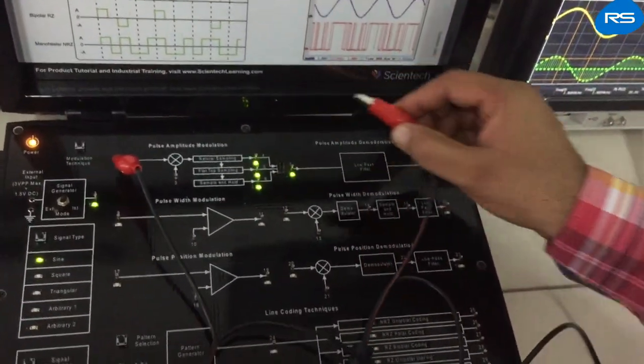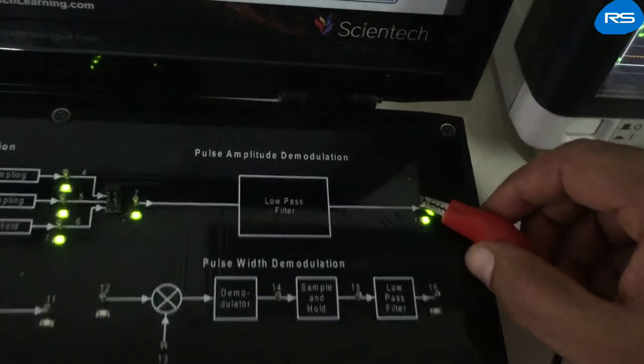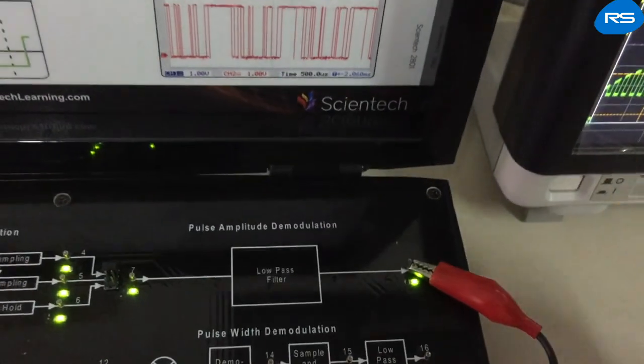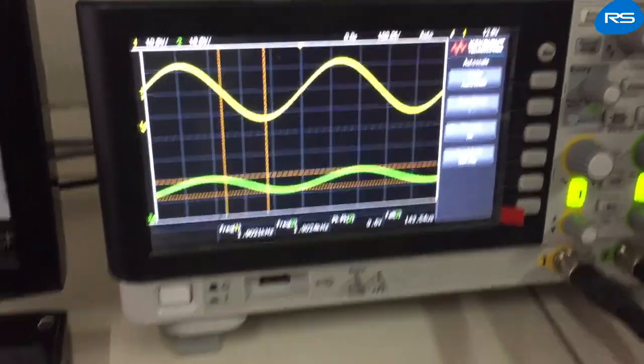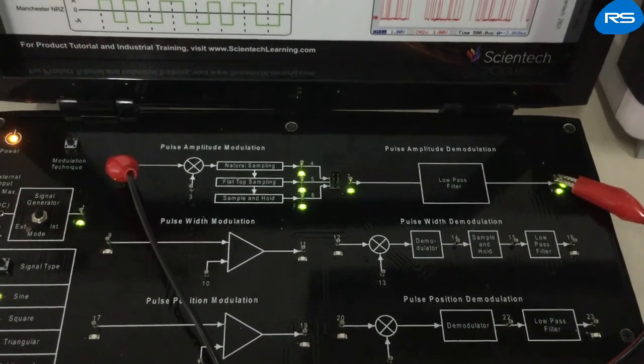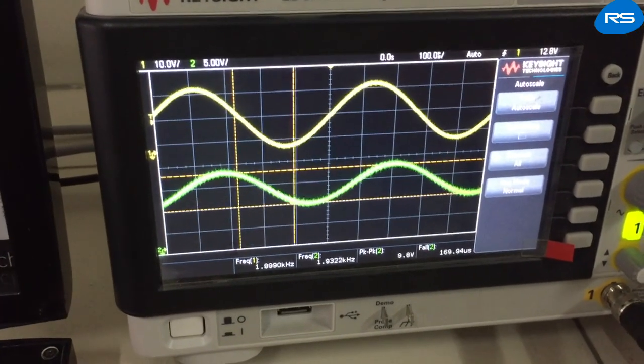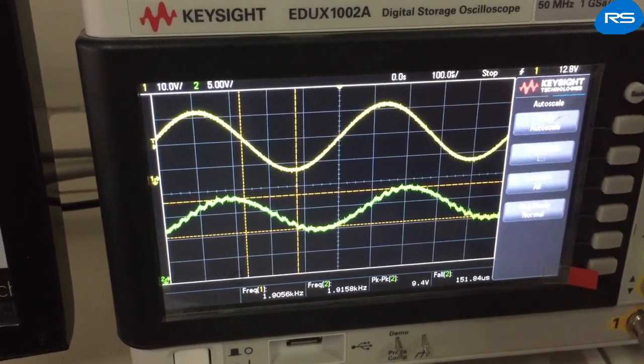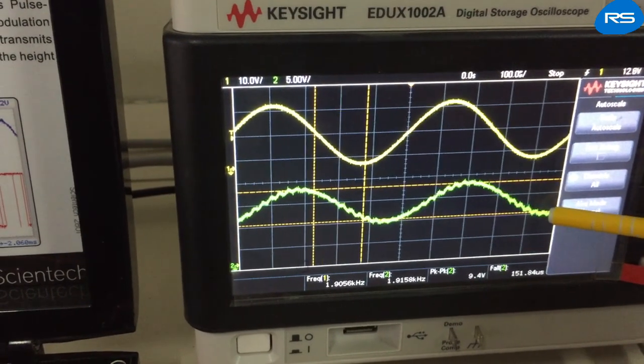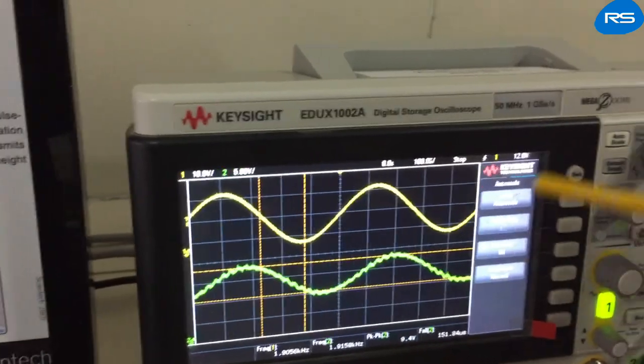And in order to observe the output, we connect CRO probe at the output of the demodulator. The output of the demodulator is a replica of the original message signal.